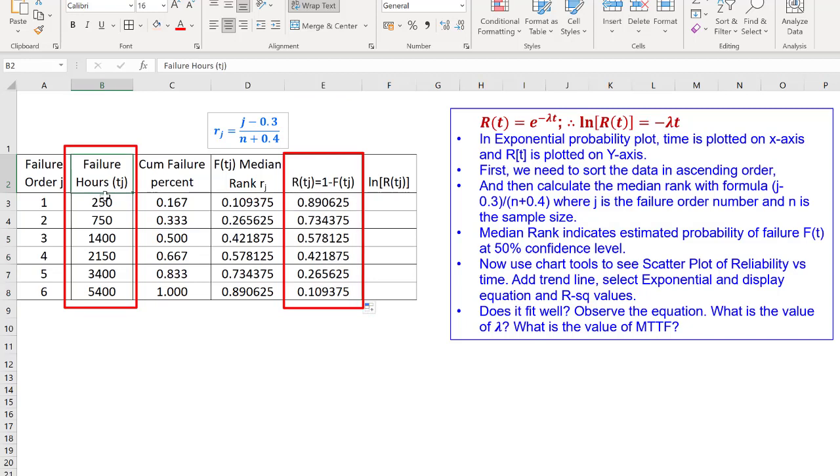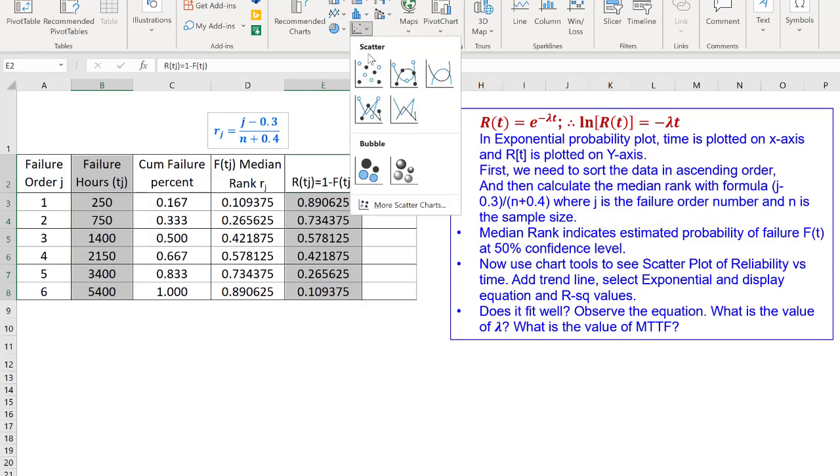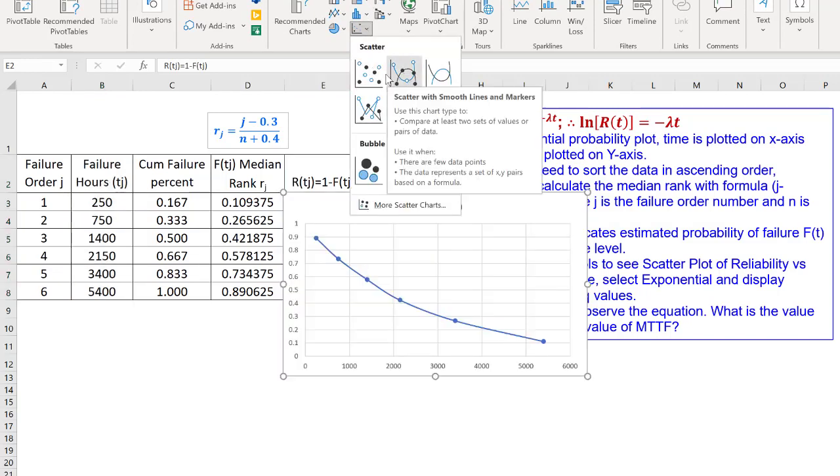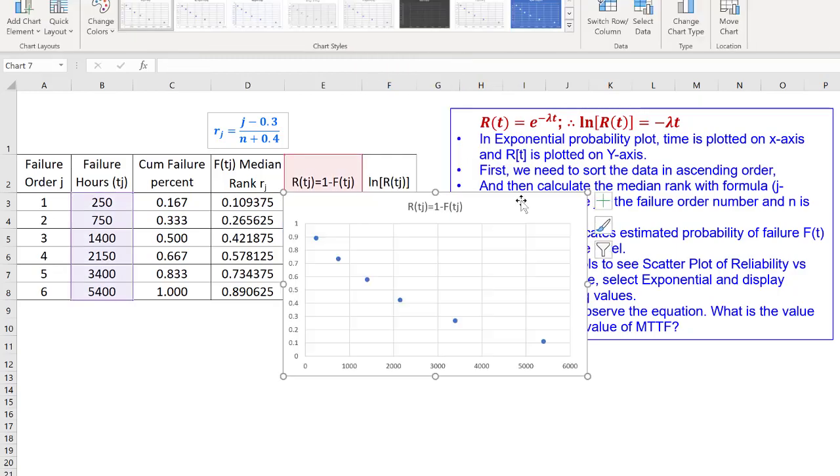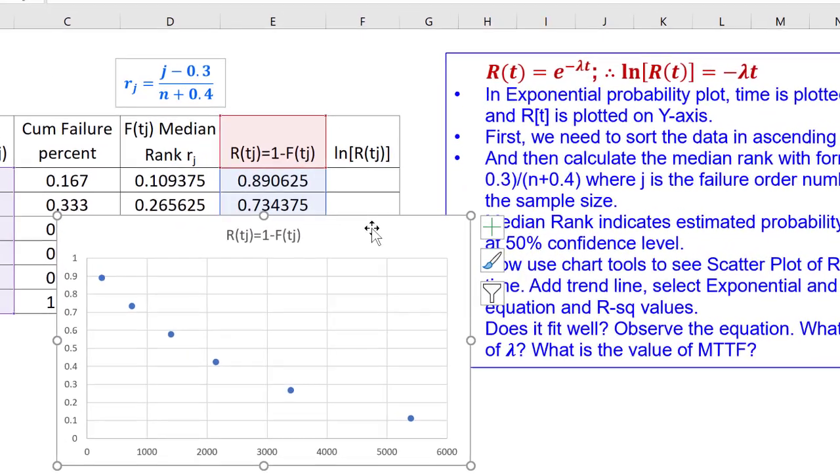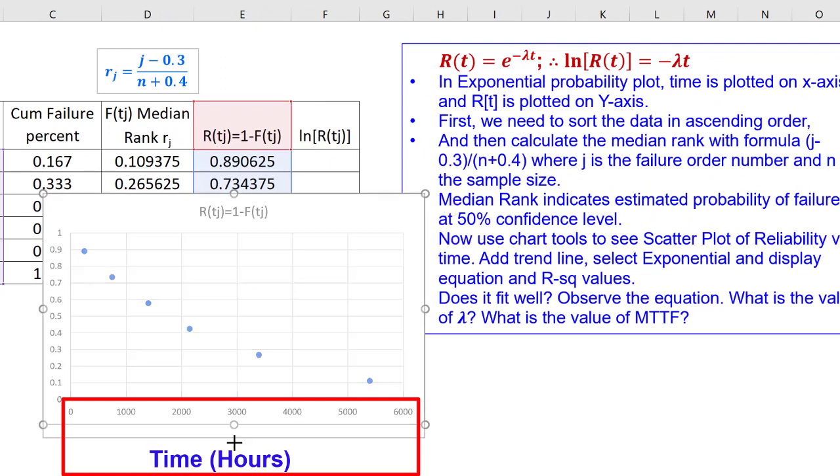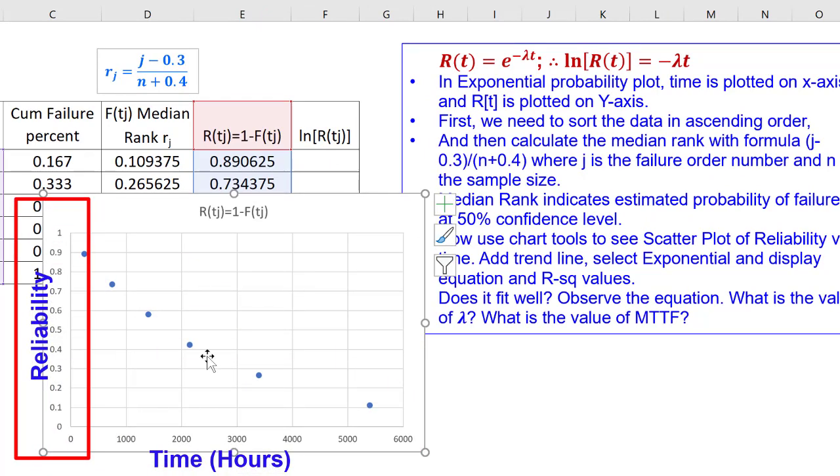Now, we could directly plot these two to find out whether it is fitting in exponential distribution. So, I select failure hours and reliability. And I say, insert scatter plot. This is the scatter plot of hours that is time versus reliability.